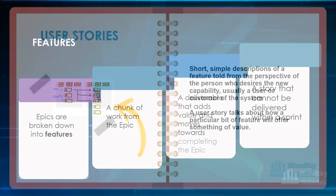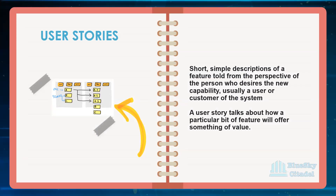User stories are short, simple descriptions of a feature told from the perspective of the person who desires the new capability — usually a user or customer of the system. That's the relationship: the epic is at the top, broken down into features, and features broken down into user stories. As a BA, you always stand in the position of the user and interpret the story as if you were going to be using it.